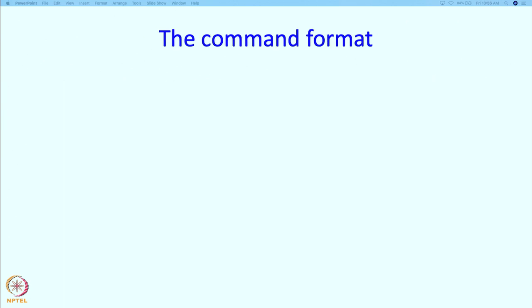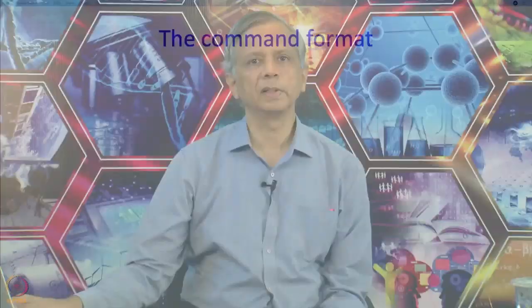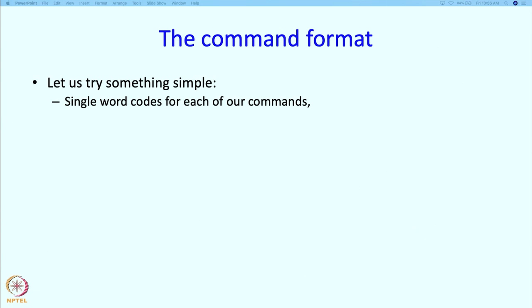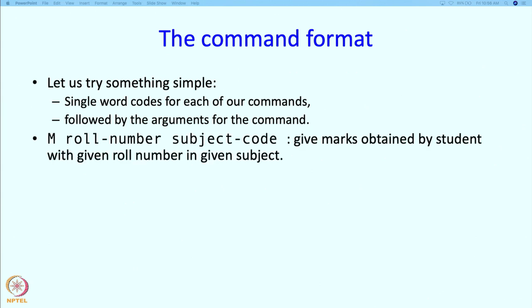First let us define how the user will communicate with our program — how will the user issue commands. We can try something simple: we use single word codes for each of our commands, and then the codes are followed by the arguments for the command. For example, we might have a command which looks like: m, role number, subject code.